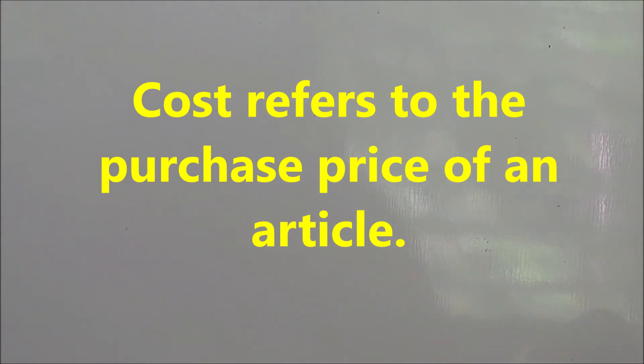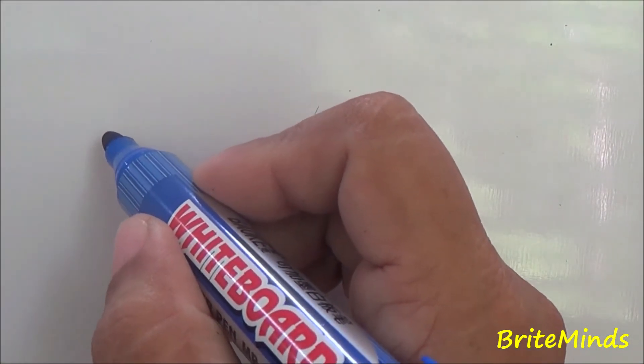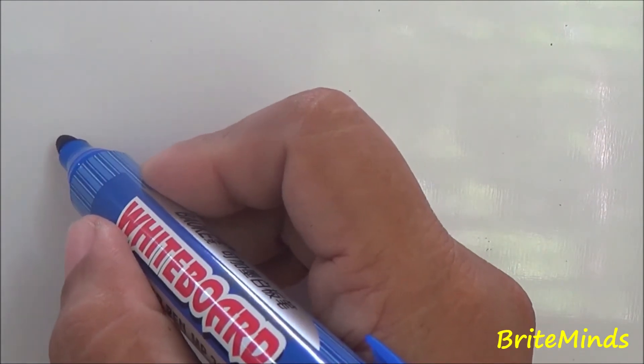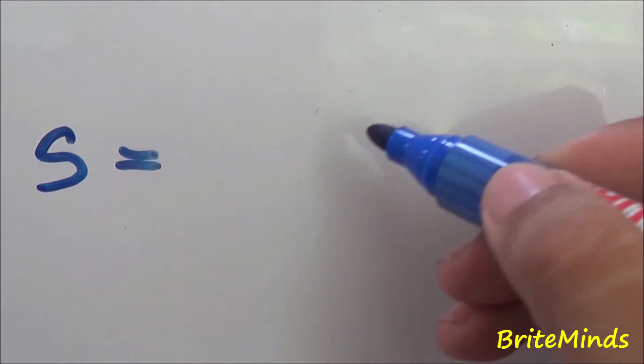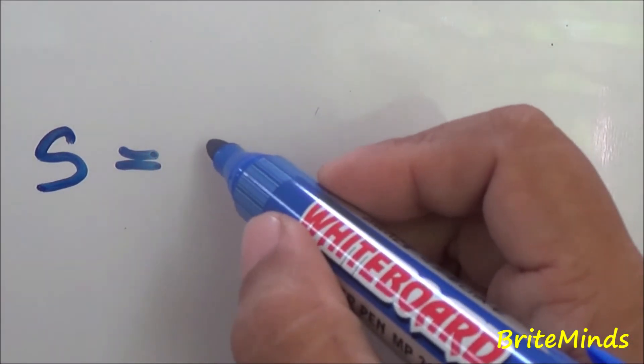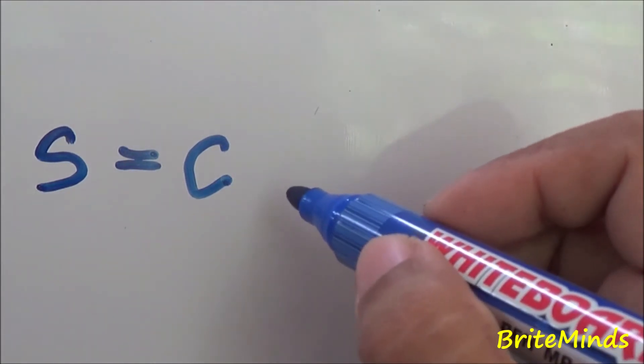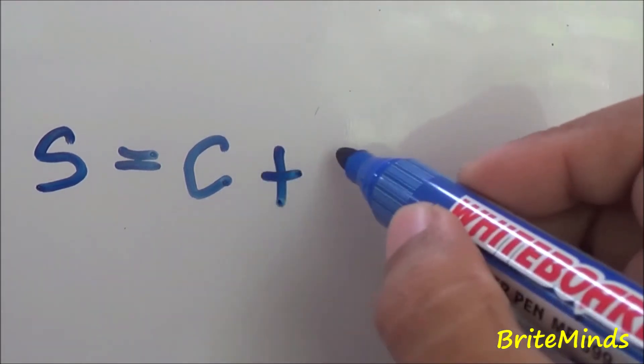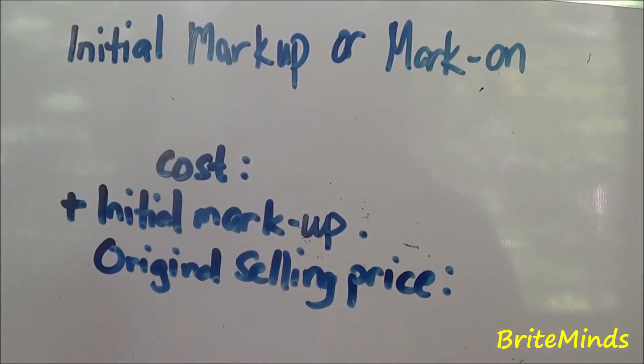Let me define first what is cost. Cost refers to the purchase price of an article. Selling price is the original price plus the mark-up or minus the mark-down. Let us denote the selling price as S, the original price or cost as C, and the mark-up as M.